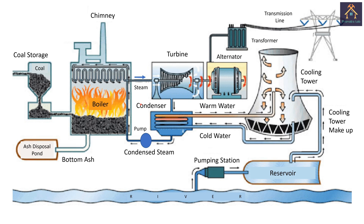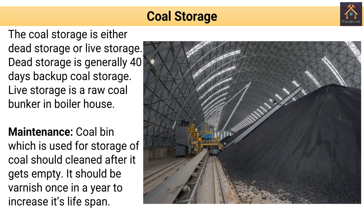The efficiency of modern thermal power plants is about 30% only. Now let's discuss some parts of a coal fired thermal power plant and their maintenance. Coal storage: the coal storage is either dead storage or live storage. Dead storage is generally 40 days backup coal storage, and live storage is a raw coal bunker in the boiler house. Coal bins used for storage of coal should be cleaned after they get empty, and should be varnished once a year to increase lifespan.